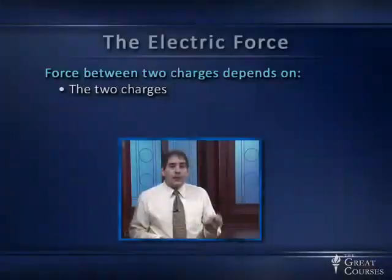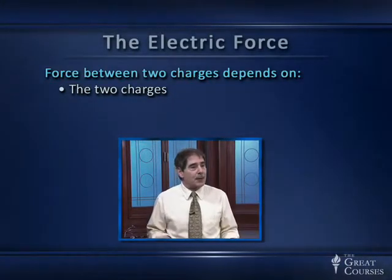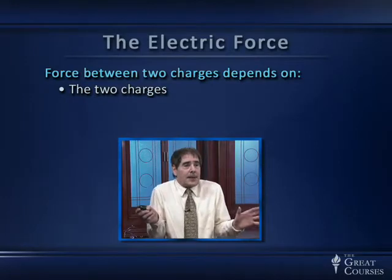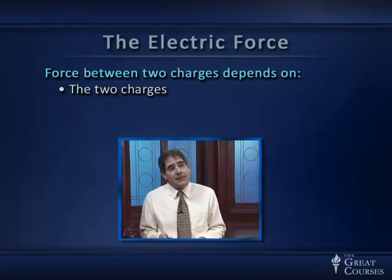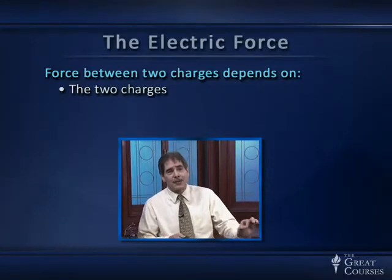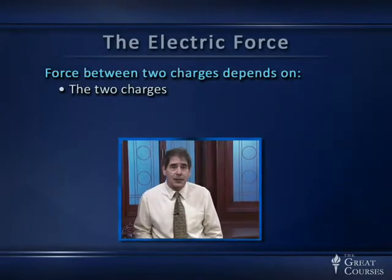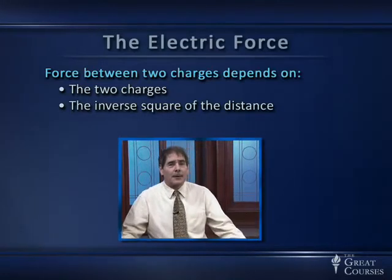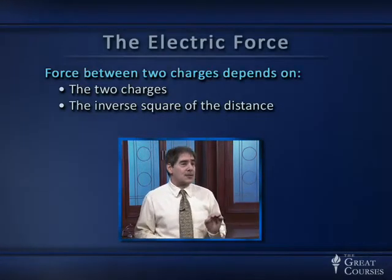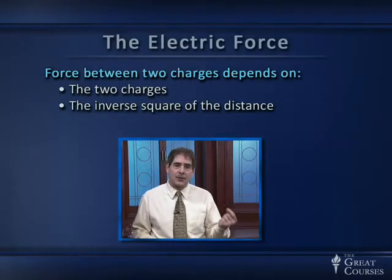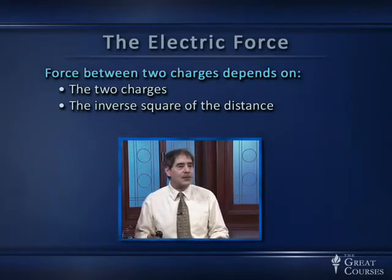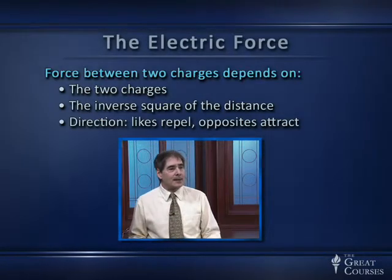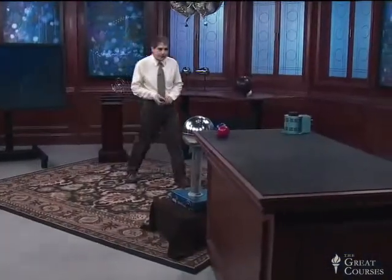The force between two electric charges depends on the two charges themselves. If you have two completely uncharged objects, they experience no electric force. The force also depends on how far apart the two charges are — the farther apart, the weaker the force — and it depends on the inverse square of the distance, which should ring a bell because back in lecture 13 we saw that the gravitational force also depends on the inverse square of distance. The direction is such that likes repel and opposites attract.